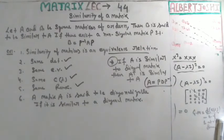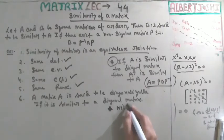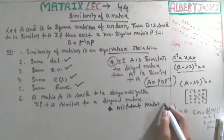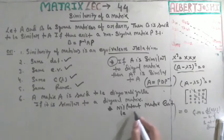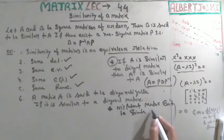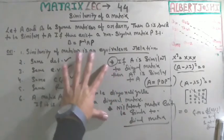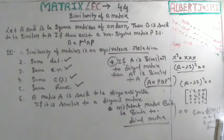You must also note that a nilpotent matrix cannot be similar to a diagonal matrix. This is an important result. A nilpotent matrix cannot be similar to a diagonal matrix — this question has been asked in last year's question paper. I hope you understand everything. Thank you so much.